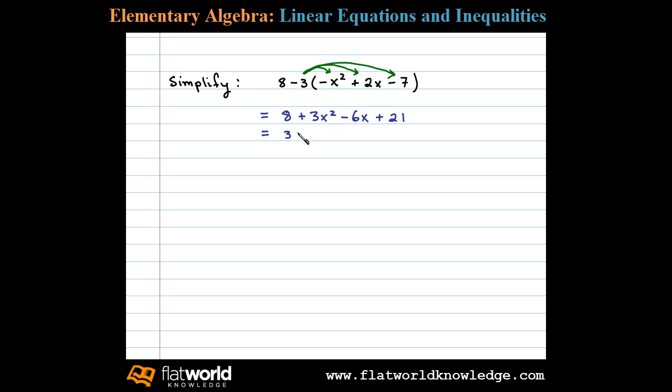Here I'll bring down 3x squared and the minus 6x. The only like terms that we have here are the constant terms 8 and 21. 8 plus 21 adds up to plus 29, and that's our final result.